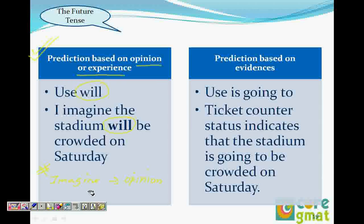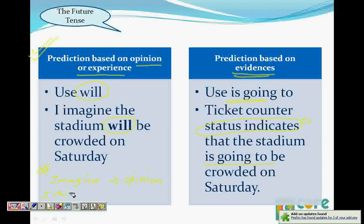When you predict on the basis of evidence, you use 'going to.' For example: 'The ticket counter status indicates that the stadium is going to be crowded.' The ticket counter has already given that information - it's evidence, not opinion. So when you have evidence, always use 'going to.' Likewise, 'the weather department reports say it is going to rain' uses 'going to' because it's based on reported evidence, whereas 'I think it will rain' uses 'will' because it's personal opinion.